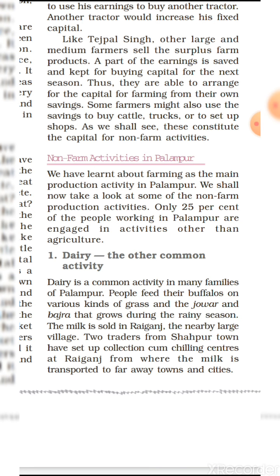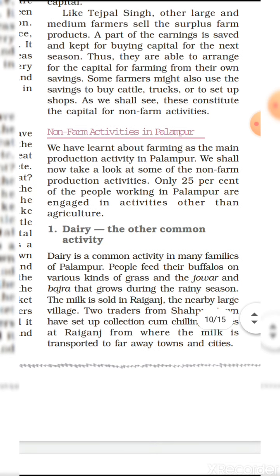The next point is non-farm activities in Palampur. We have learnt about farming as the main production activity in Palampur. We shall now look at some of the non-farm production activities. Only 25% of the people working in Palampur are engaged in activities other than agriculture, while 75% are dependent on land. These are known as non-farm activities in Palampur.